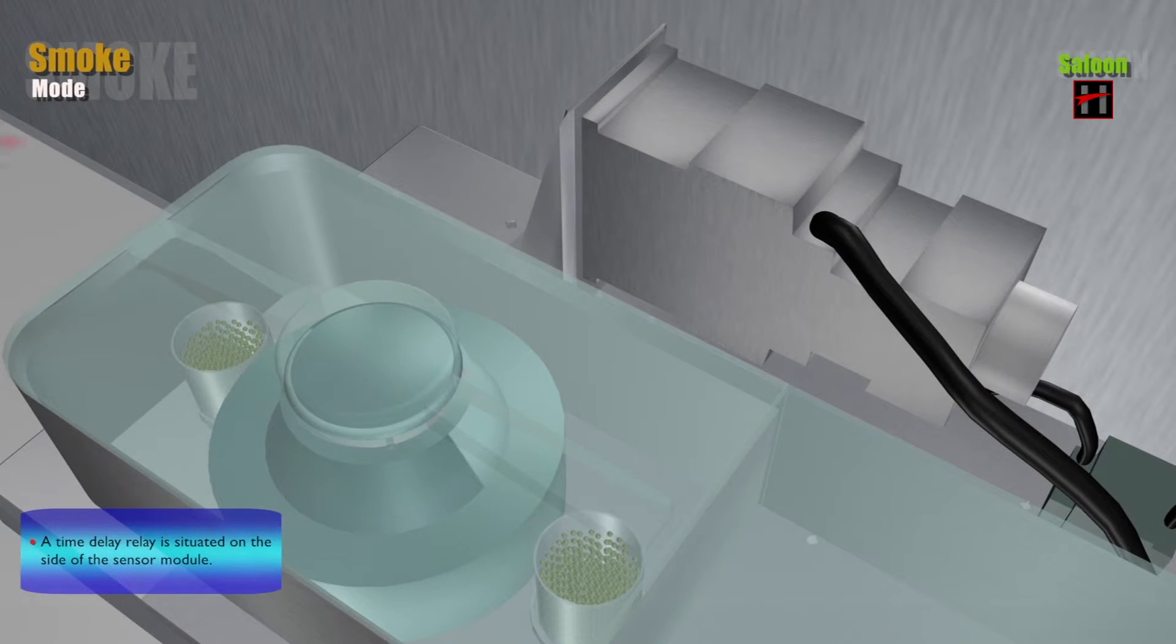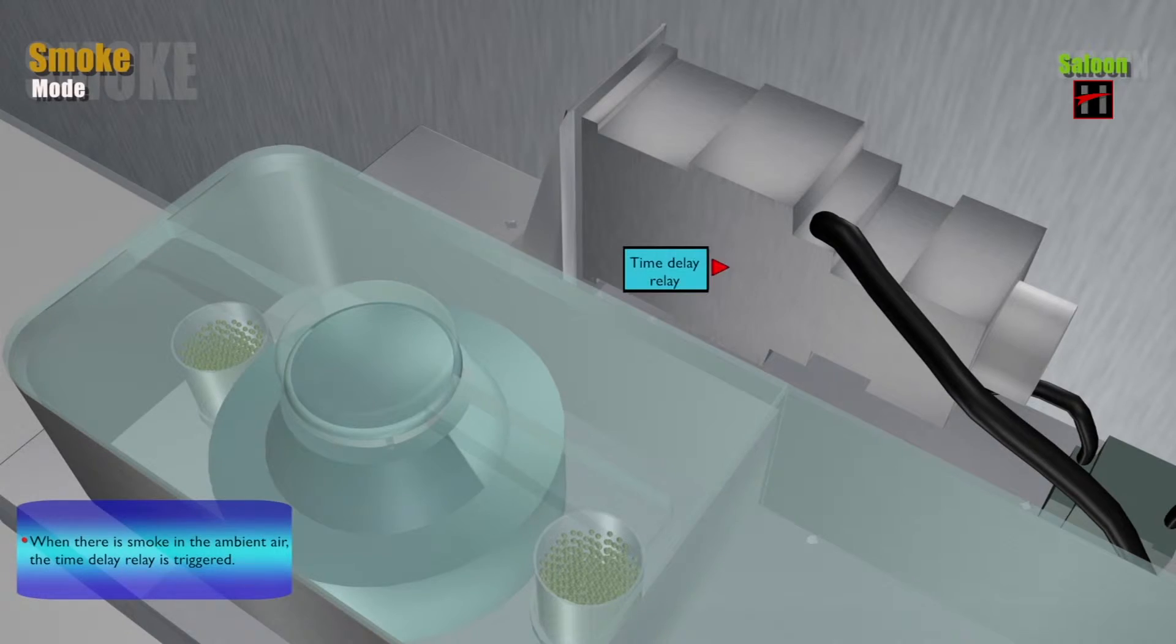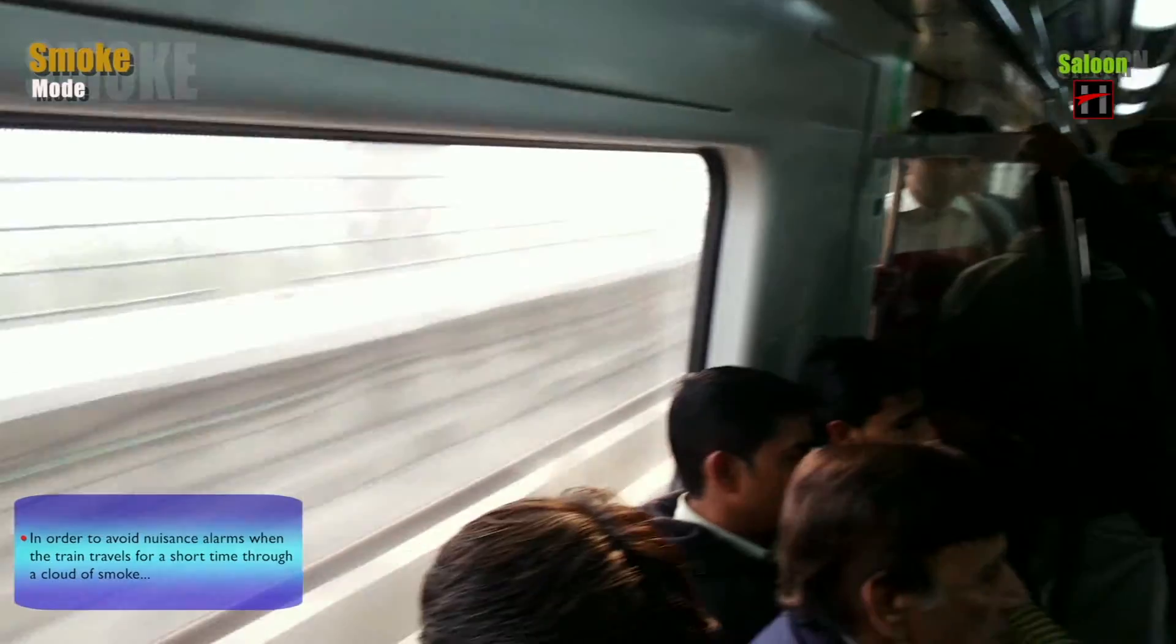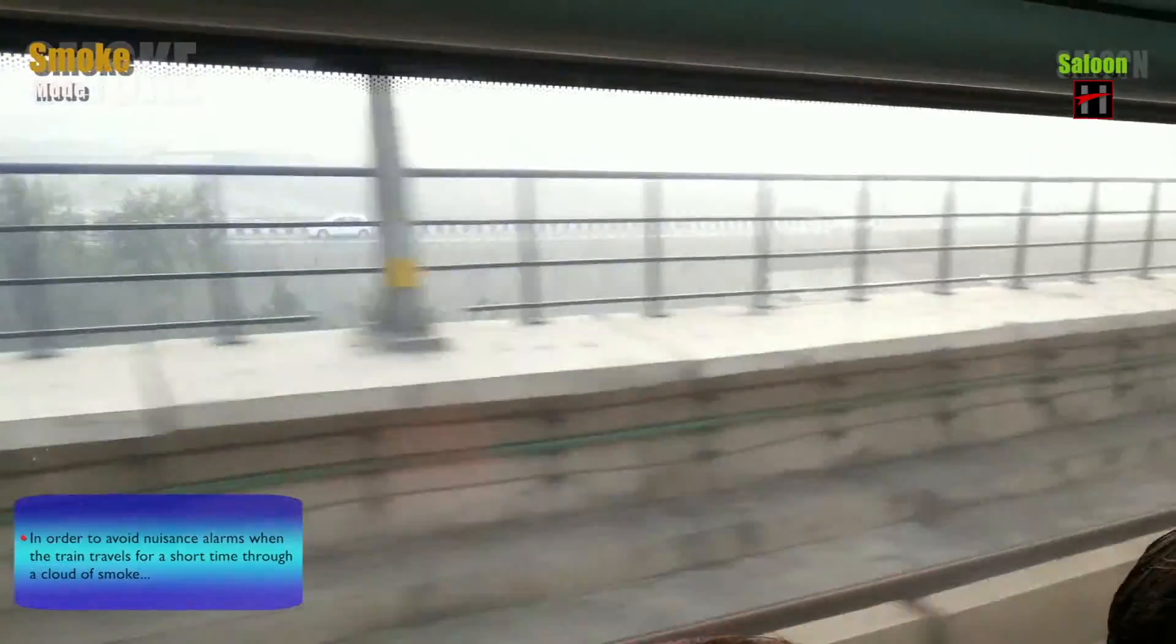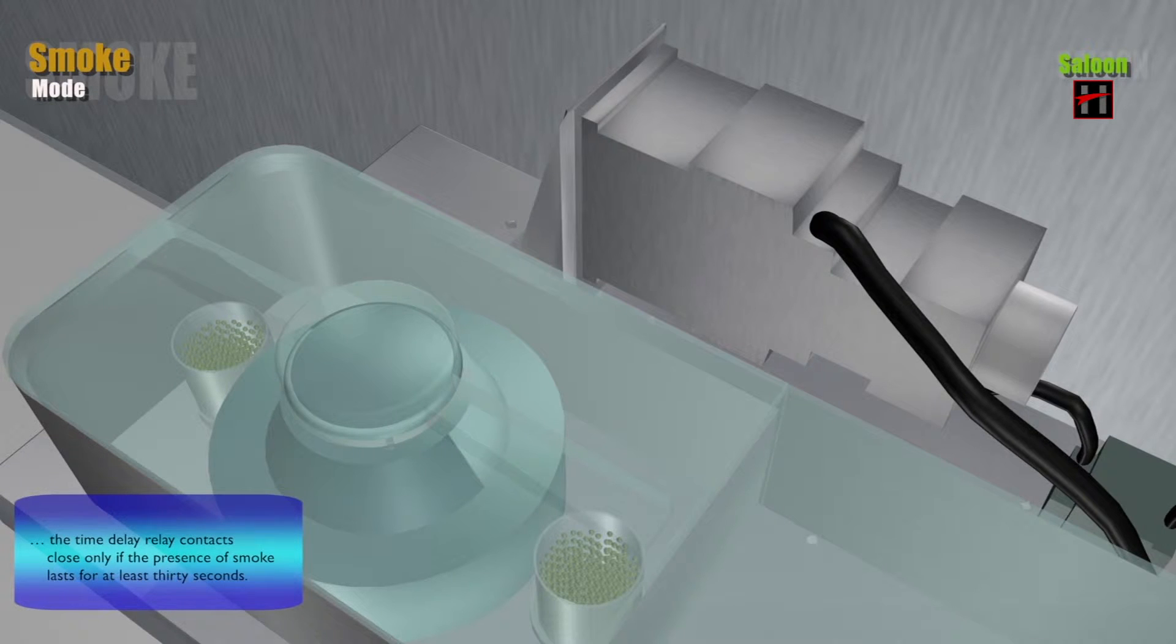A time delay relay is situated on the side of the sensor module. When there is smoke in the ambient air, the time delay relay is triggered. In order to avoid nuisance alarms when the train travels for a short time through a cloud of smoke, the time delay relay contacts close only if the presence of smoke lasts for at least 30 seconds.